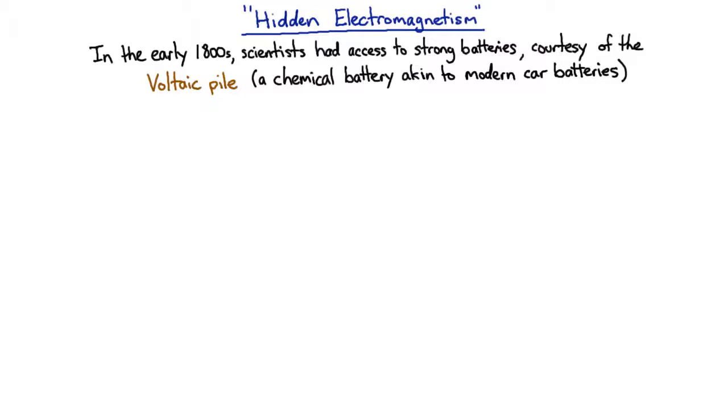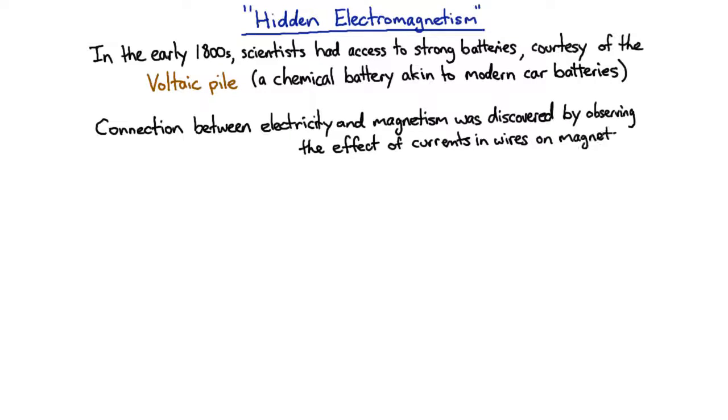people discovered that electricity and magnetism were connected when they started passing current through wires and noticed they could move compass needles. Once they discovered they could make forces with electricity, this opened the door for the revolution in technology that is our almost ubiquitous use of electricity.